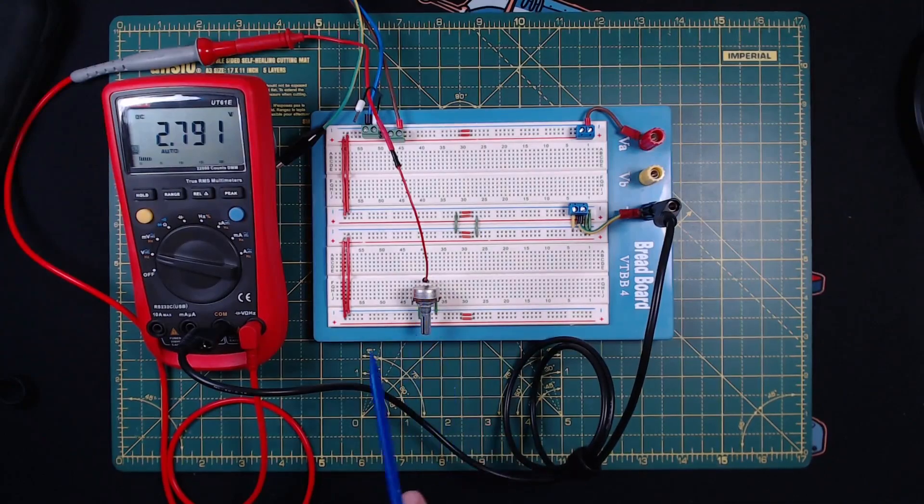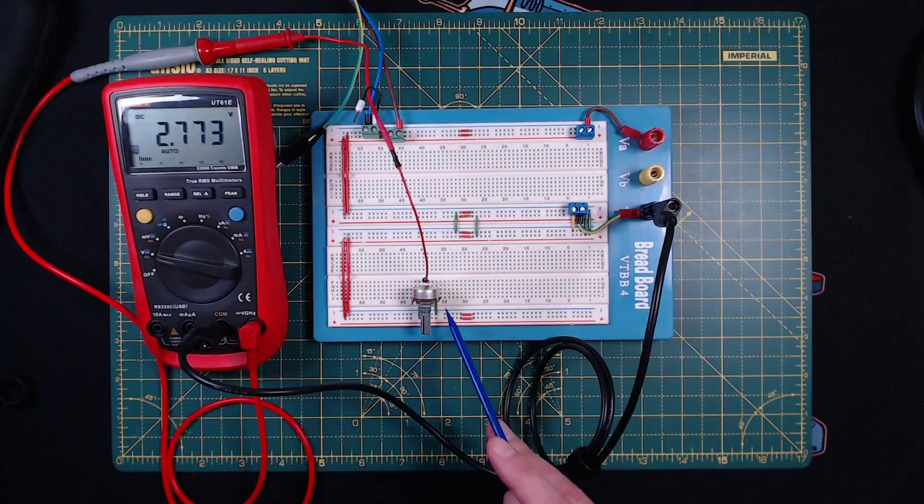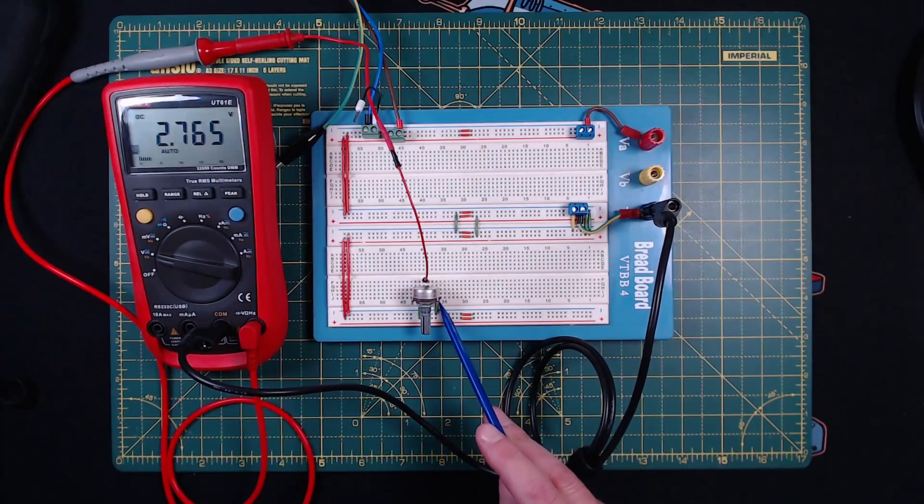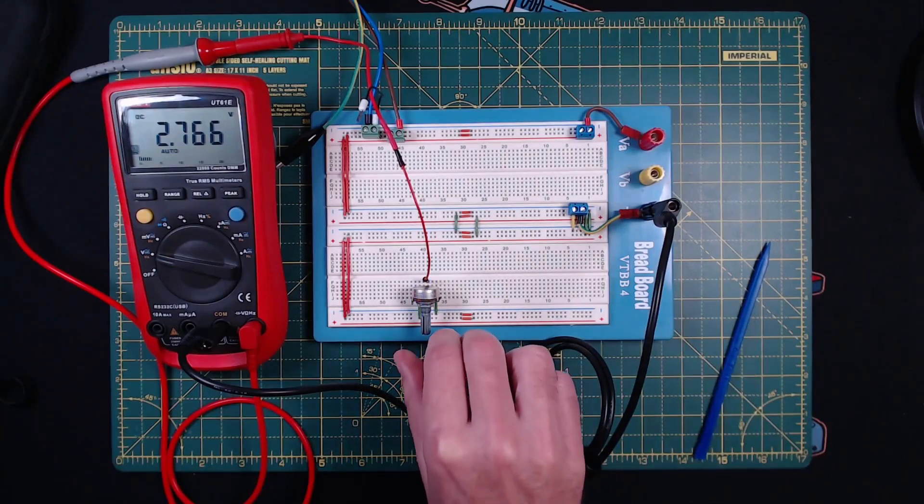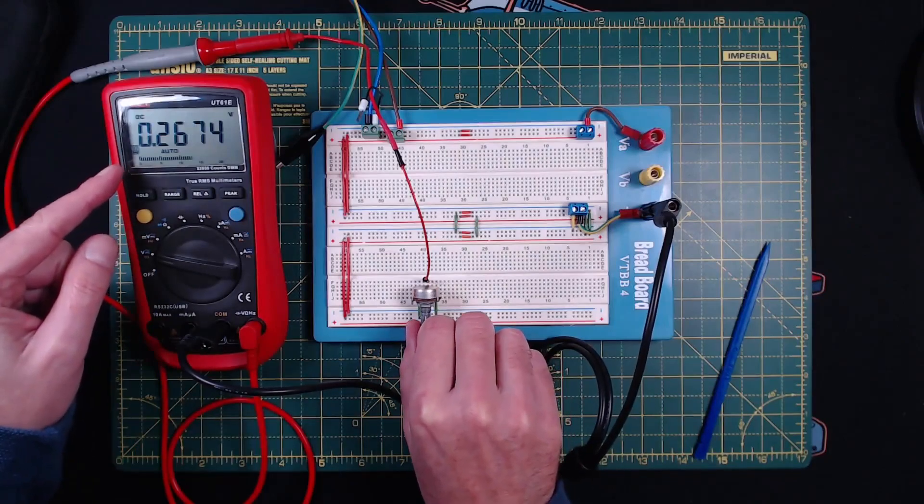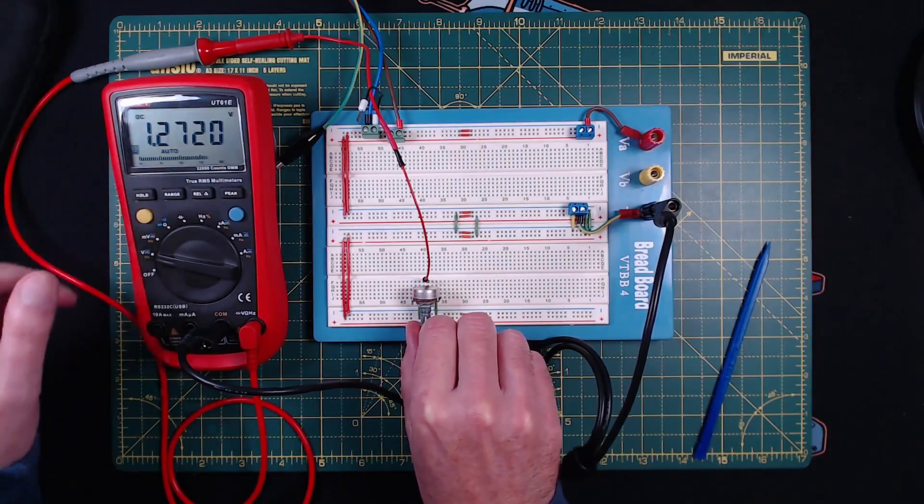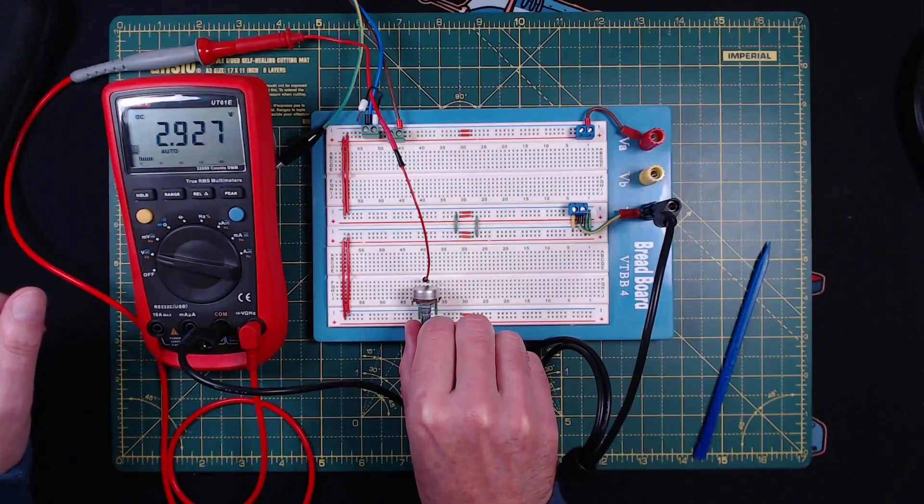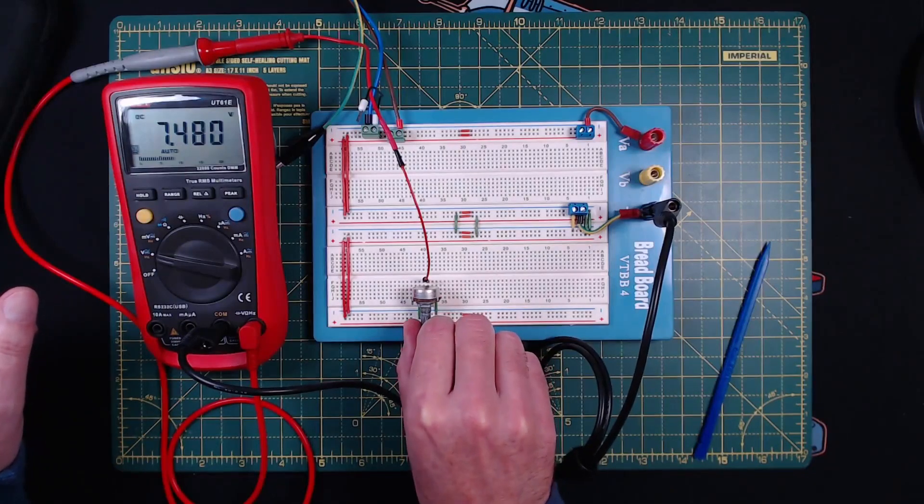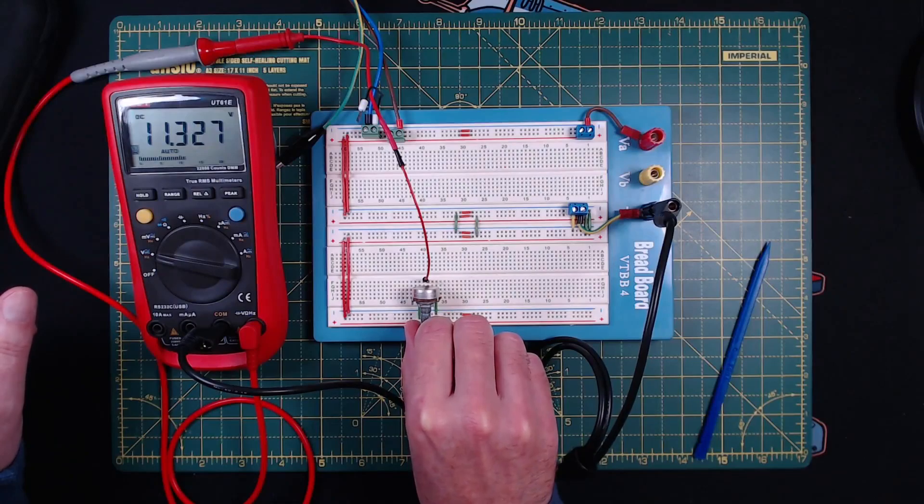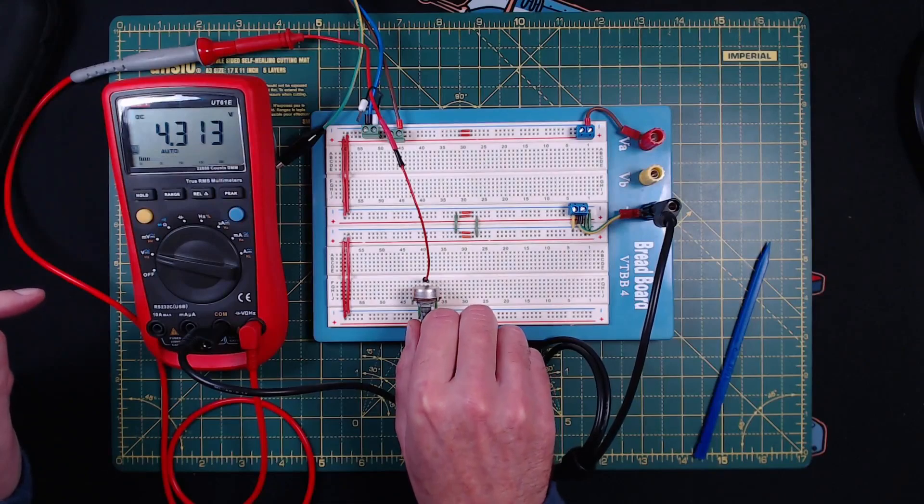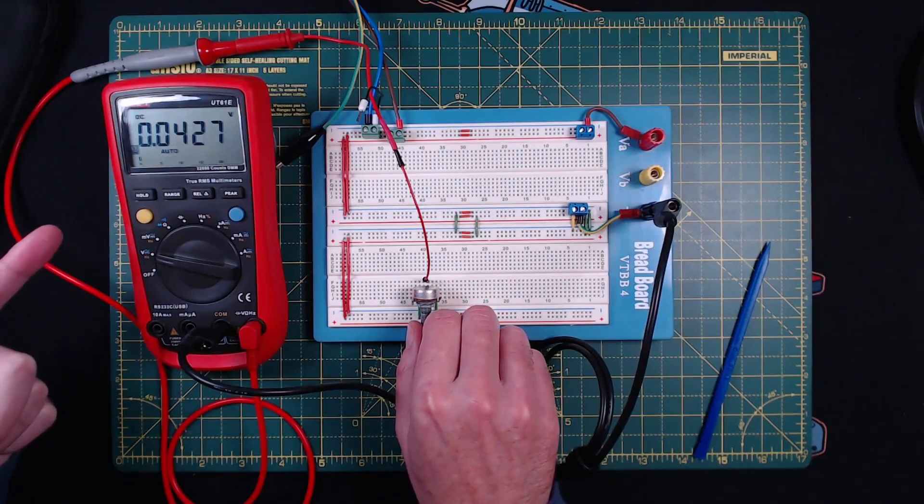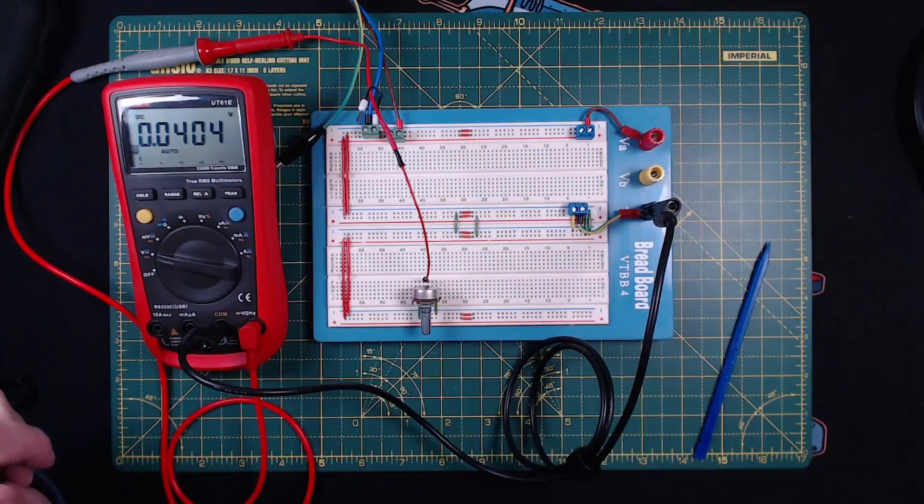When you have a potentiometer wired like this, where you've got one leg connected to your positive supply and the other leg connected to your ground or zero volts, and then you take the output off the middle pin, you end up with a really handy adjustable voltage selection. So how does that work? Let's have a look.